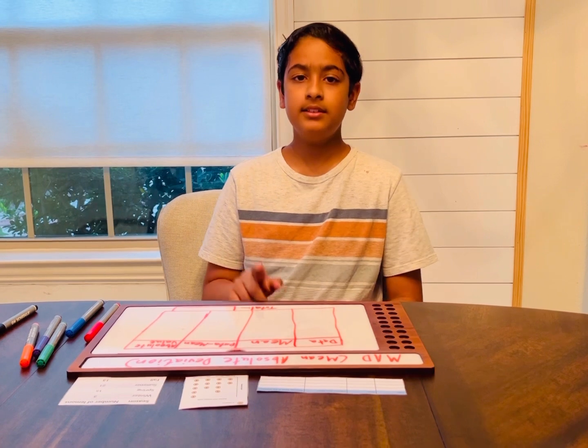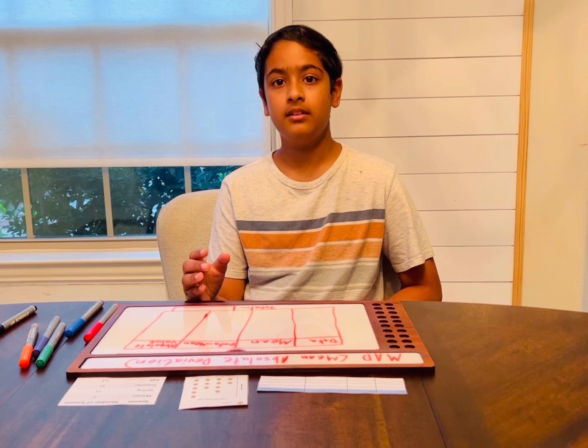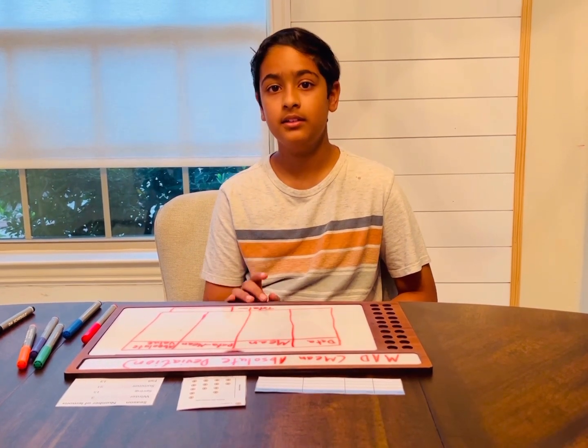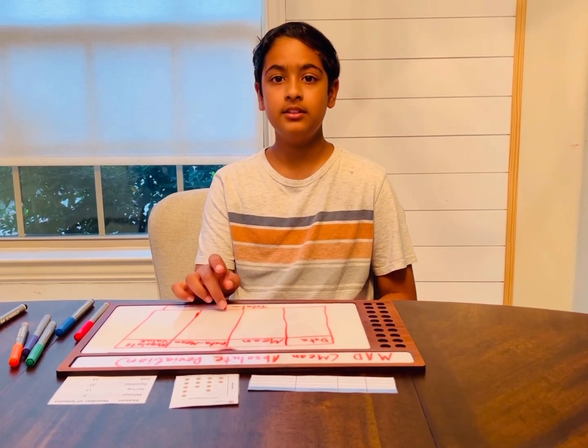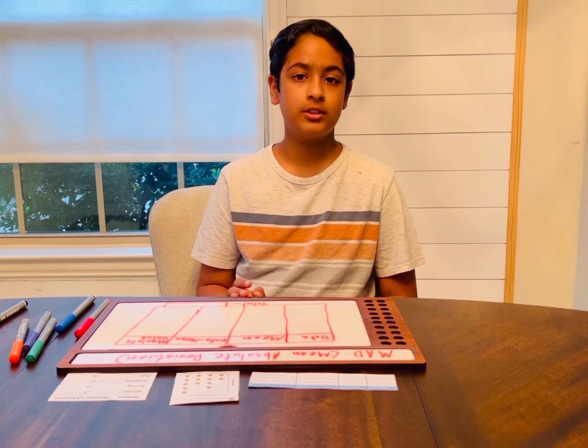Next is the data minus mean, or the distance from data and mean. Basically, you're subtracting the data from mean. Next, you're finding the absolute value of the distance from data and mean. That distance is what you write in the fourth column.